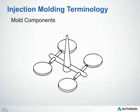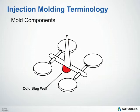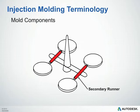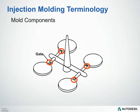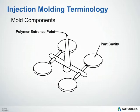Now we'll discuss some of the injection molding terminology for a typical molded component. We have our sprue, our cold slug well, our primary runner system, our secondary runner system, the gates, and of course the part cavity. We have a polymer entrance point that starts at the top of the sprue, and that's where flow begins — filling through the sprue, through the primary runner, through the secondary, through the gate, and finally into the part cavity.